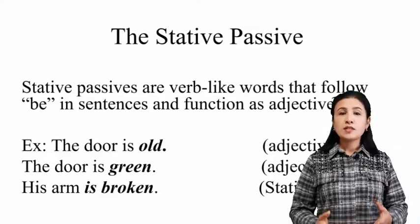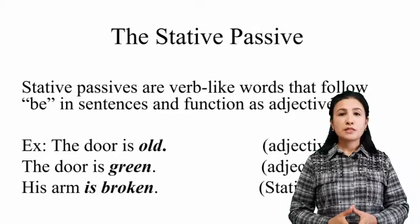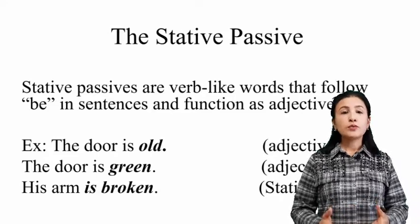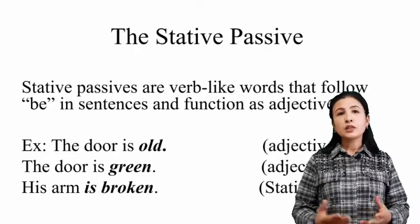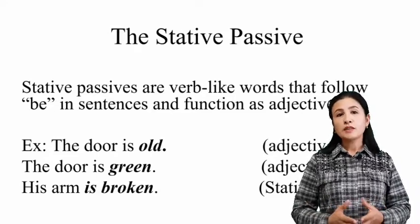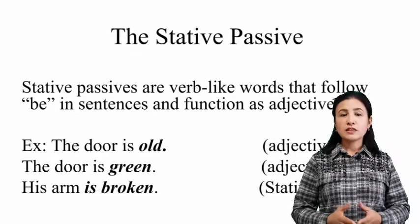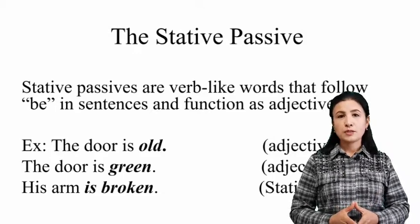Now, what's stative passive? Stative passives are verb-like words that usually follow 'be' in sentences and function as adjectives.